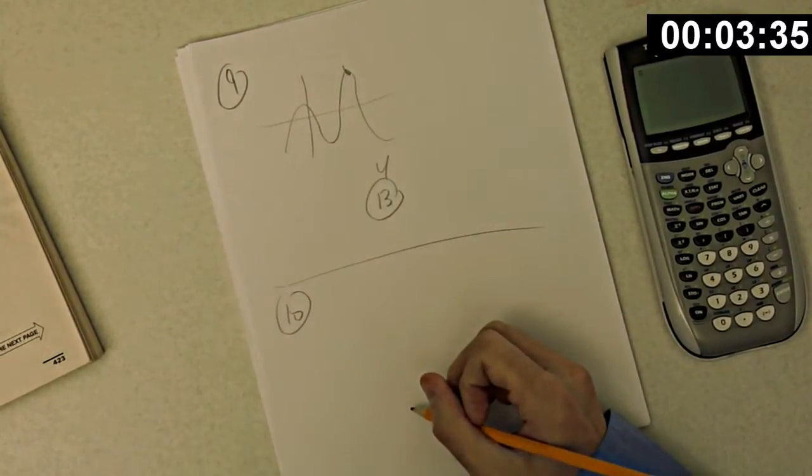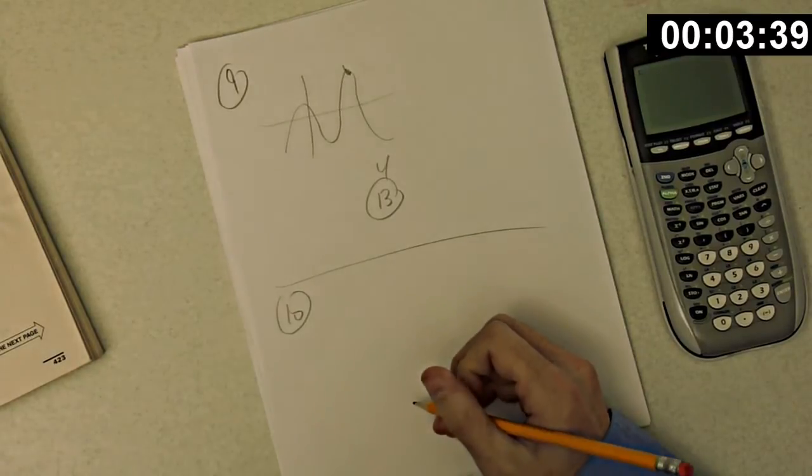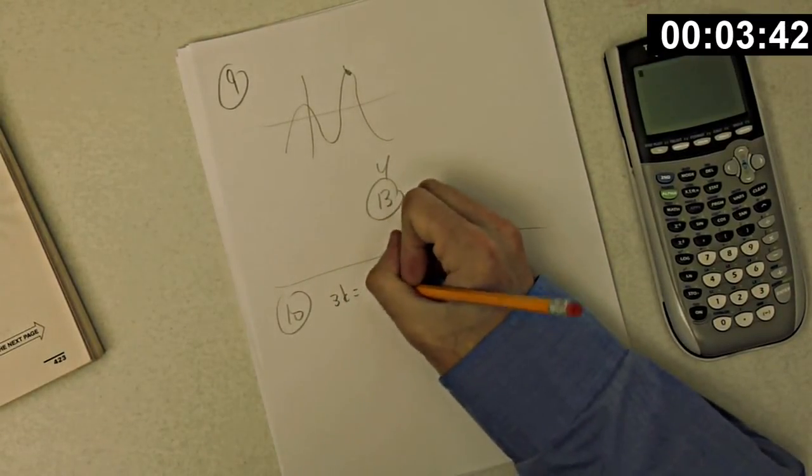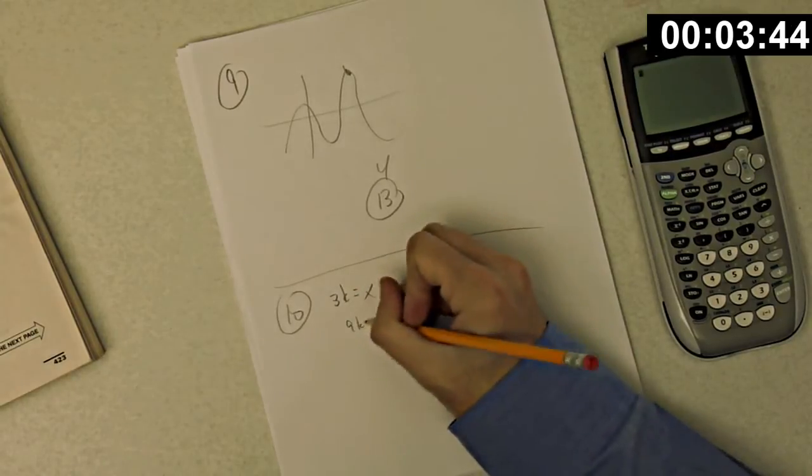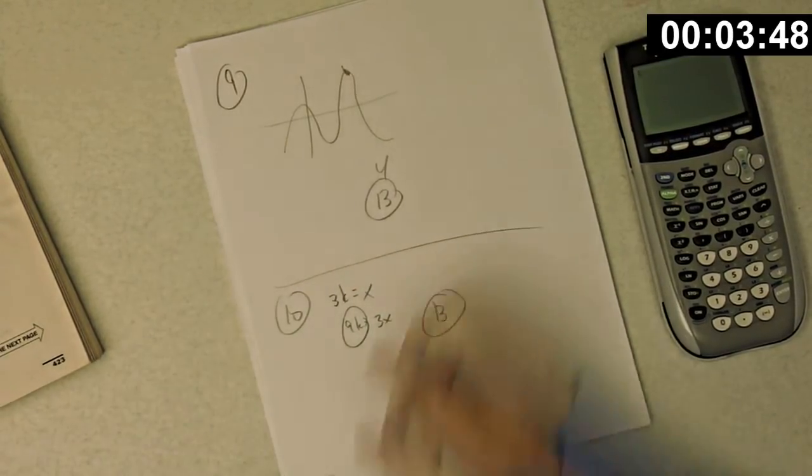Okay, number 10. If k equals x over 3 and x is non-zero, what does 3x equal in terms of k? So we have 3k equals x and we want 3x. So 9k is 3x. 9k, that's choice B.